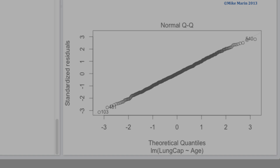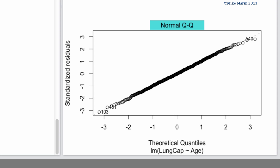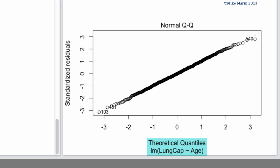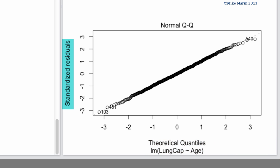The second plot is known as a Q-Q plot, or quantile-quantile plot. The Y axis shows the ordered observed standardized residuals, and the X axis shows the ordered theoretical residuals — what we would expect if the errors are truly normally distributed. If the Y values or error terms are normally distributed, these points should fall roughly on a diagonal line.